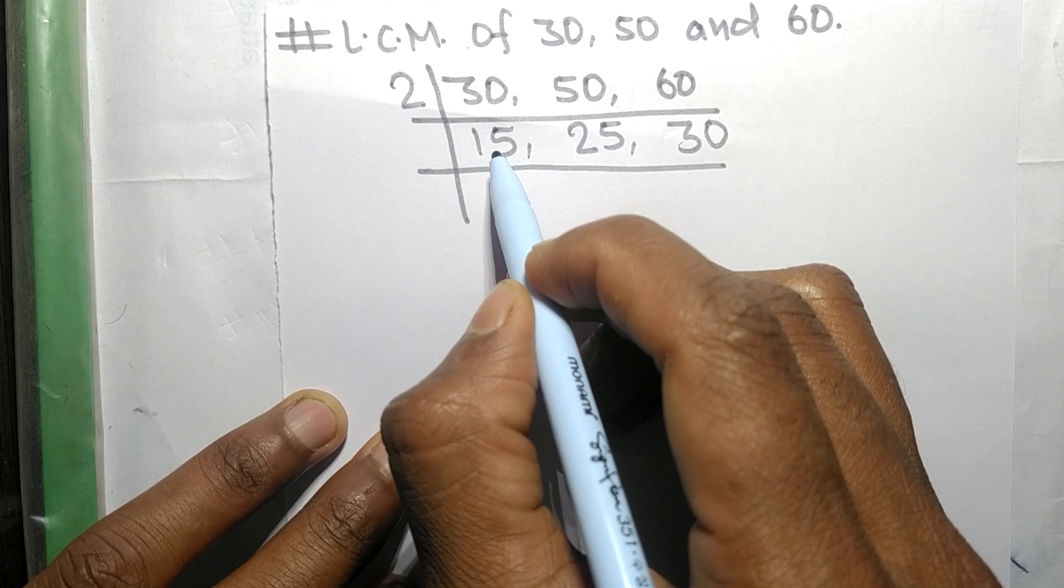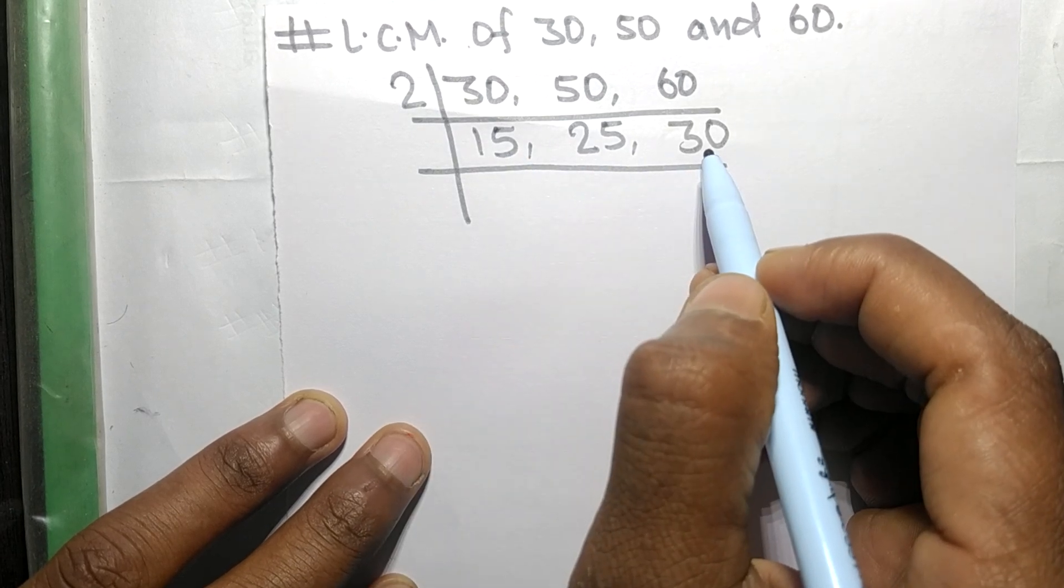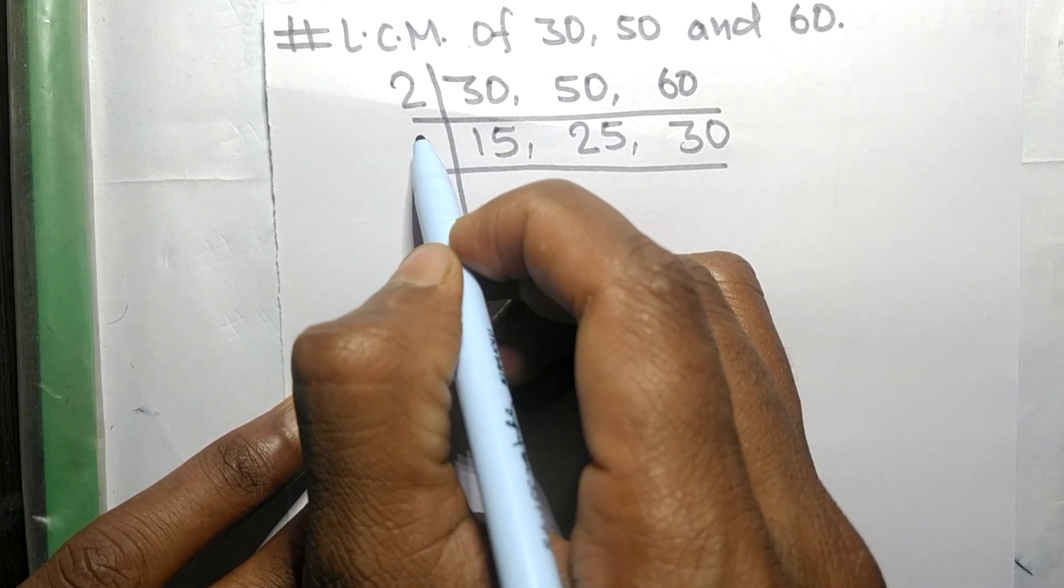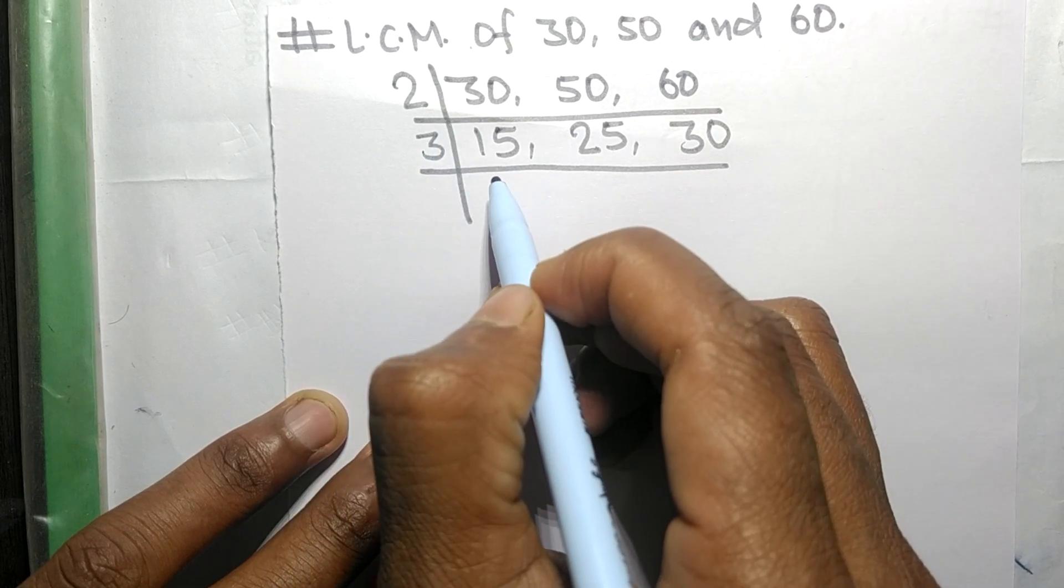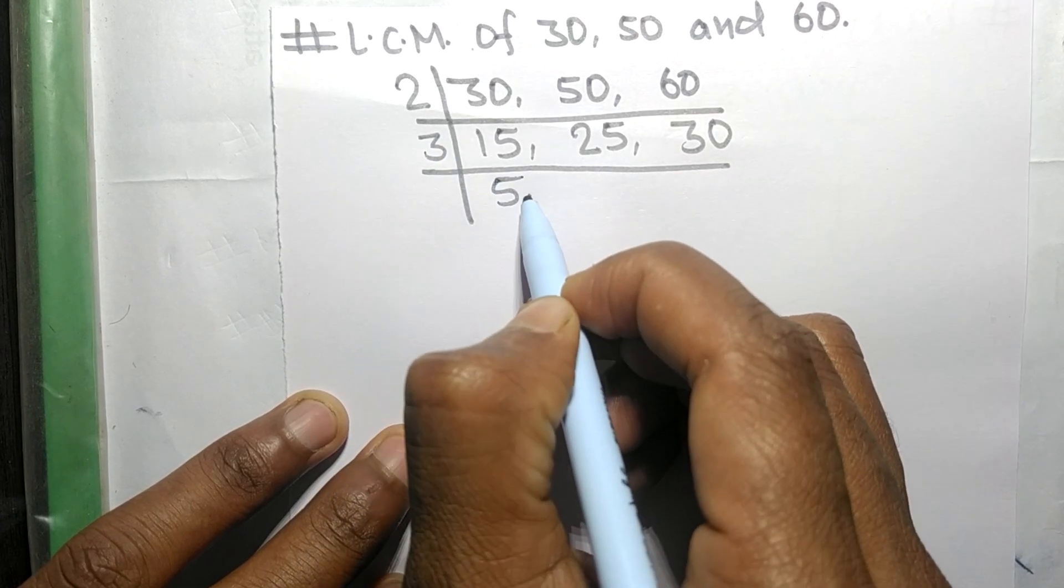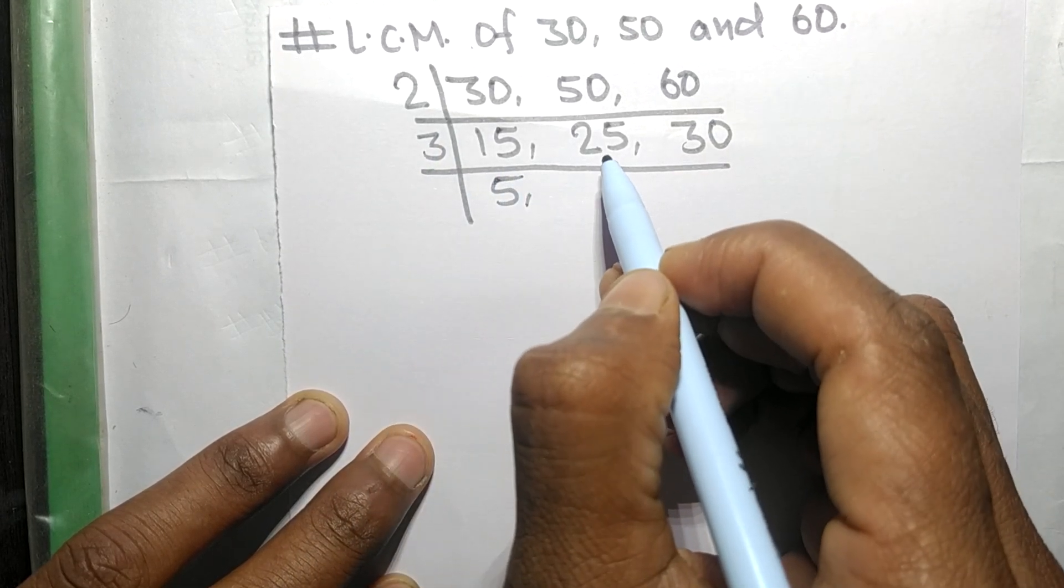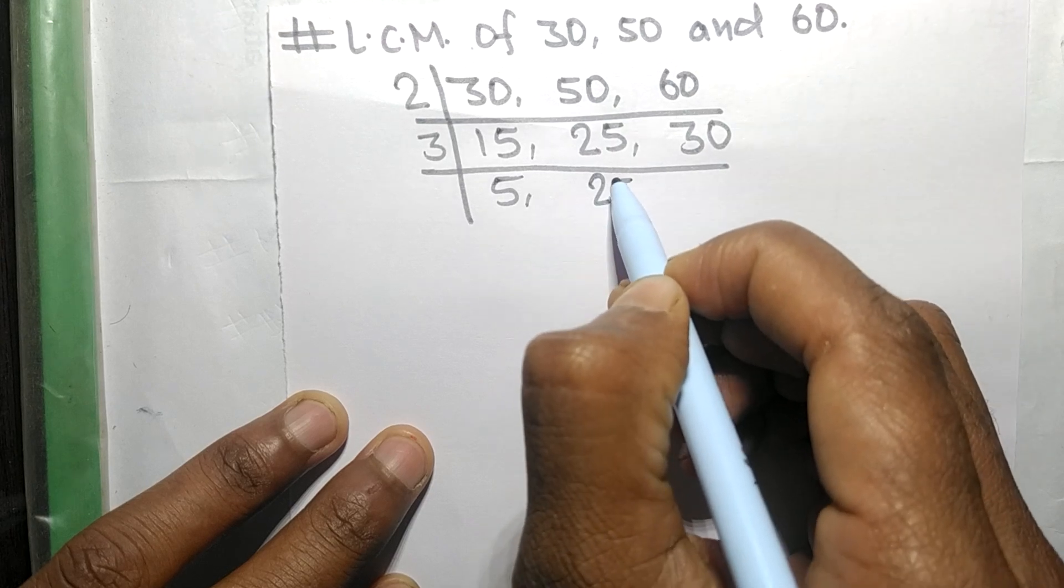Now this 15 and 30 are exactly divisible by 3. So 3 times 5 mean 15, 25 not divisible so it is same, 3 times 10 mean 30.